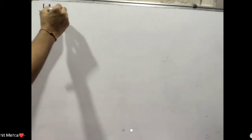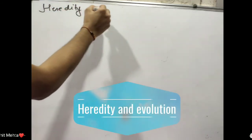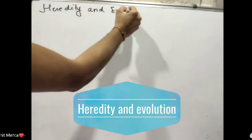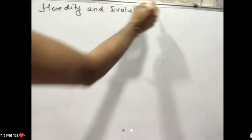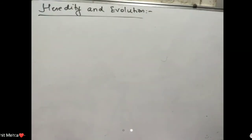Heredity and evolution is the first part of the chapter. We have seen evolution, evidences of evolution and everything. Now we will understand the first part of the chapter, which I did in the second part. The reason was because you first needed to understand evolution.